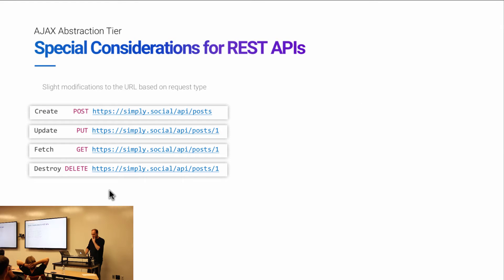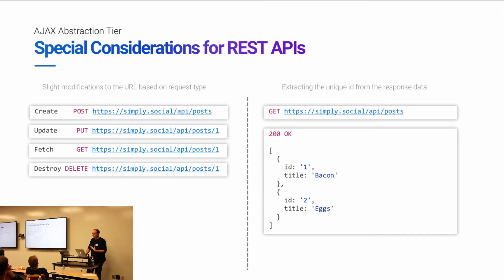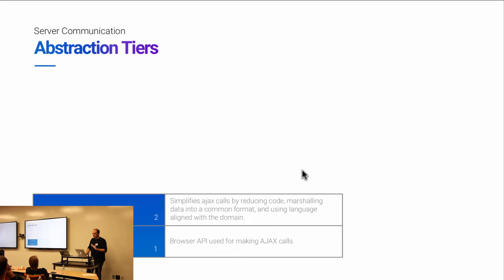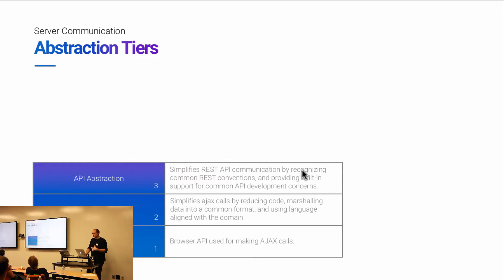The reason we don't just stop there is that REST APIs have special considerations — they're Ajax plus some other things on top. REST APIs follow conventions around types of requests and URL structure. And the data that comes back is going to have an ID field, which is a first-class concept that we care about in our applications. So on top of Ajax, we can build an API abstraction tier to make that communication easier.